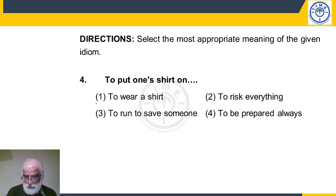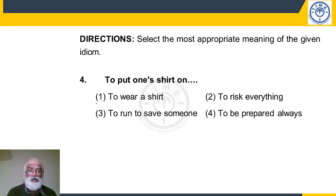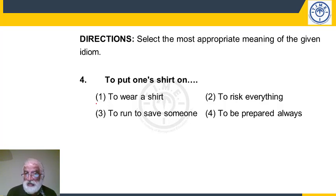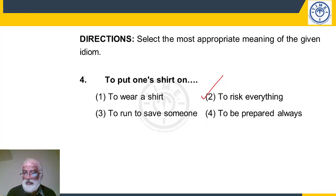Question 4: to put your shirt on something. This is an idiom meaning to risk everything you have on something you want to undertake. If somebody were to put their shirt on a promise someone has made, it means they are risking everything for that promise. It's not merely wearing a shirt, not running to save someone, not being prepared always — it means to actually risk everything for what you want to carry out.